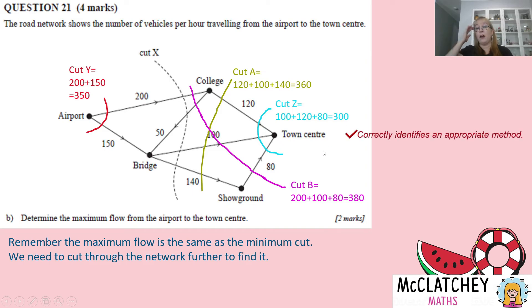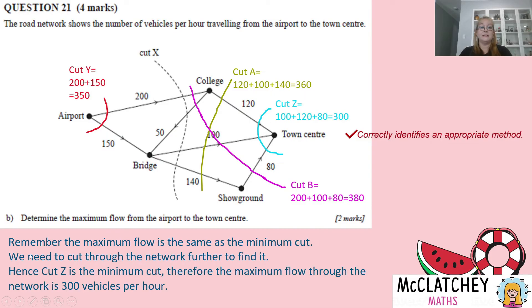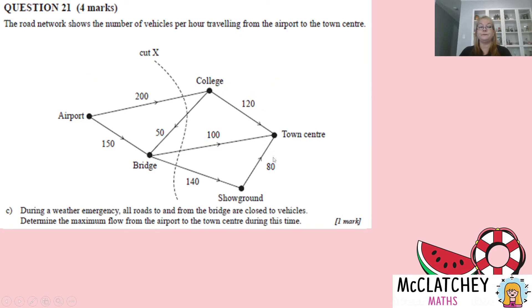So we've identified all the cuts with an appropriate method and cut Z is actually the minimum cut. Therefore, the maximum flow through the whole network is going to be 300 vehicles per hour. That's my maximum flow through the network. So I can't push 360 cars or 380 cars through because the most the network can take is what is made up of these roads at the very end.